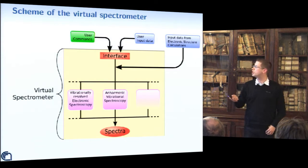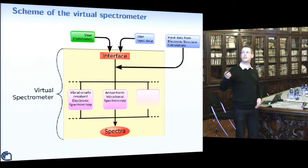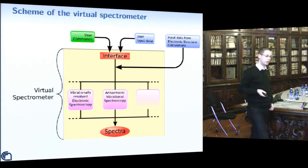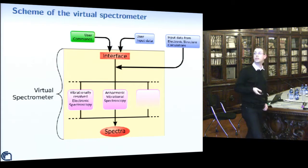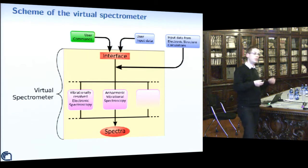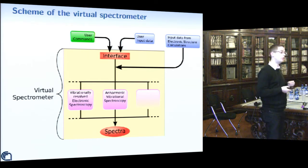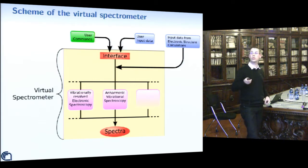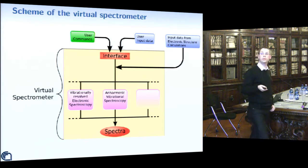Schematically, the virtual spectrometer, which is under development, is shown in the yellow box. It takes input data primarily from one or more electronic structure calculations. The user interacts with the spectrometer through an interface where additional input data can be given, or commands to control the behavior of the spectrometer.